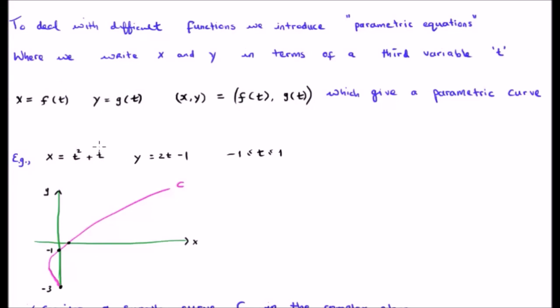For example, let's say we wrote x as t squared plus t, y is twice t minus 1, where t went between minus 1 and 1. You'd get the curve here in pink.